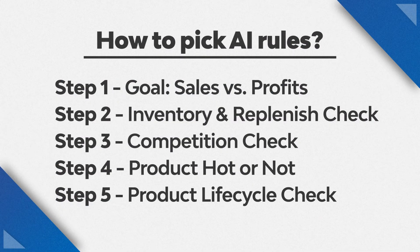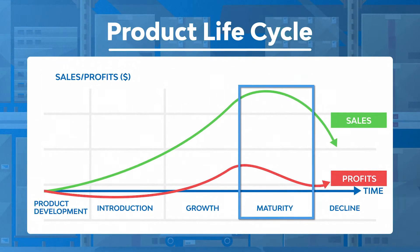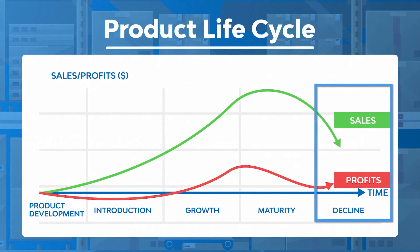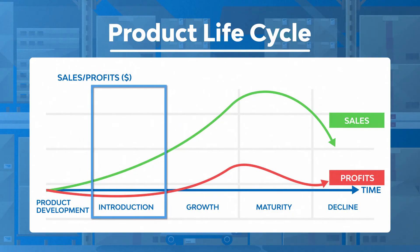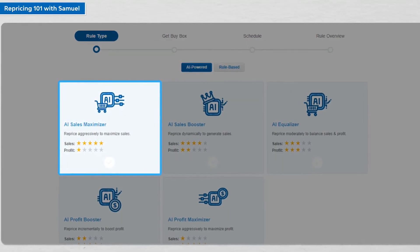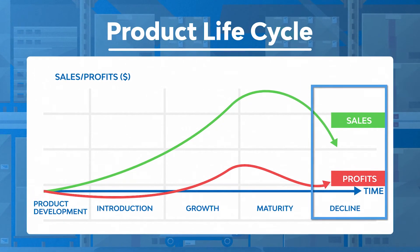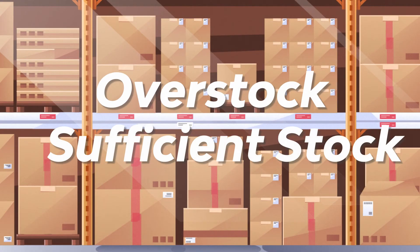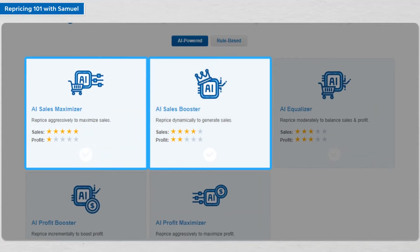Fifth, consider the product lifecycle factor. Is this a mature product that's been on the market for a long time with lots of reviews and stable monthly sales? Or is this product declining in search popularity? If your product is new to the market with very few reviews and your goal is to get a lot of sales in a short amount of time, put it on AI Sales Maximizer to boost its sales ranking. If the product is in decline, with declining sales and overstock or sufficient stock, we recommend a more aggressive AI rule such as AI Sales Maximizer or AI Sales Booster to help prevent slow-moving inventory issues.